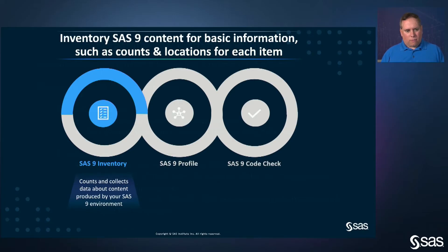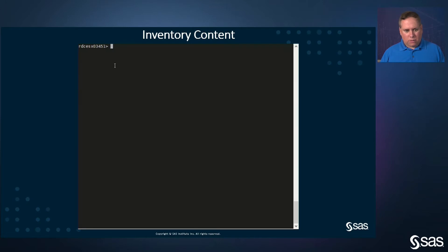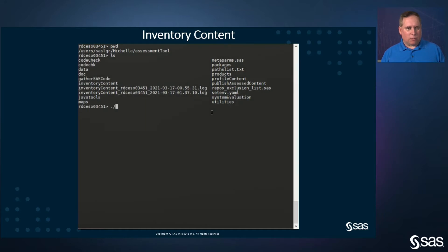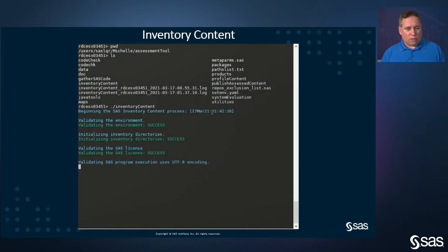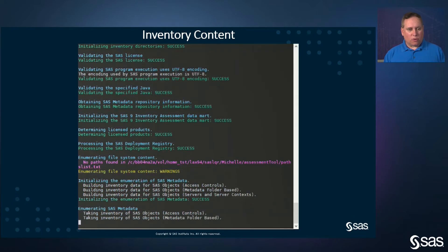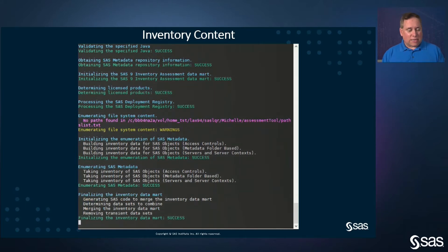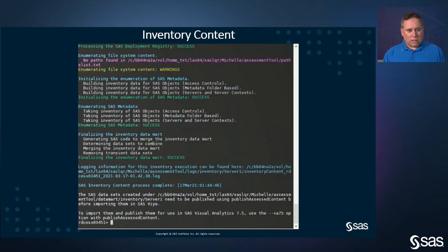Thanks, Michelle. As we talked about before, inventory helps us count and collect data. We're going to run a script on your system and see how the steps look on screen as we collect the data. We prerecorded this, but we're going to run the assessment tool — looking at the same directory that Michelle showed a little earlier — and run the first part called inventory content. You'll see a couple of things scroll by on your screen. It doesn't take very long and will vary based on the size of your system. We're looking through all the places you told us to look: your metadata server, file system paths where you might have content like Enterprise Guide programs or EG projects, SAS code, and other assets. And we're finished.